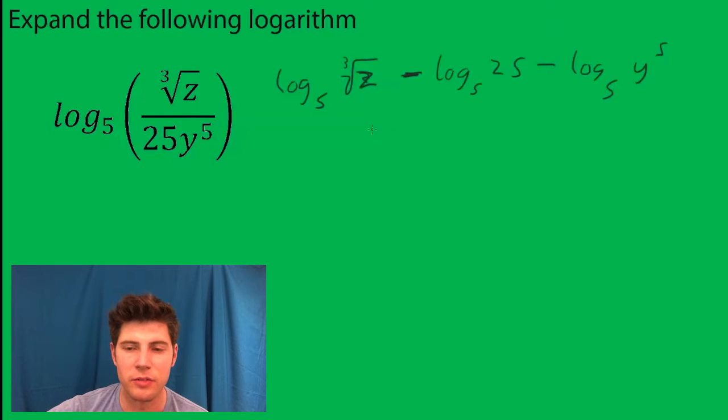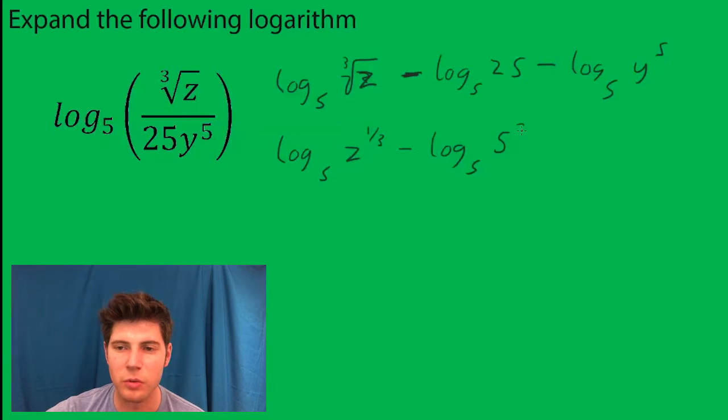All these exponents can be brought down in front. So first I'll just rewrite them with all the exponents expressed. So this is z to the one-third, minus, and this 25 can be broken down into 5 squared.